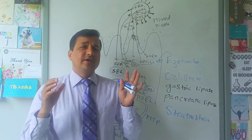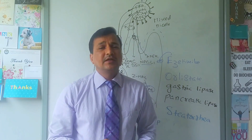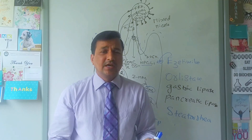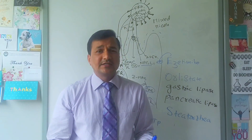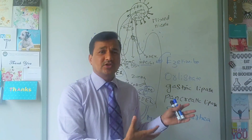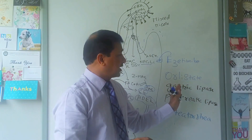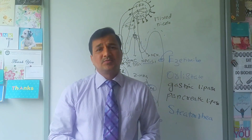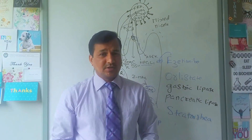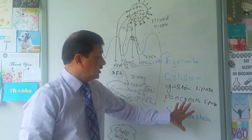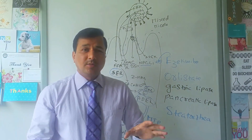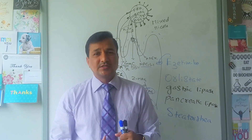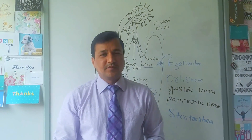Steatorrhea occurs wherever there is a problem with lipid digestion and absorption — for example, Crohn's disease, ulcerative colitis, cystic fibrosis where exocrine pancreatic enzymes are deficient, or inflammation of the small intestine causing decreased absorption. That concludes the topic of digestion and absorption of lipids.